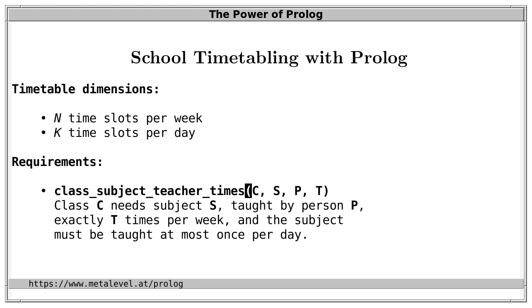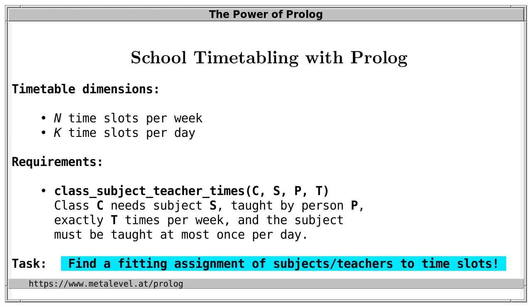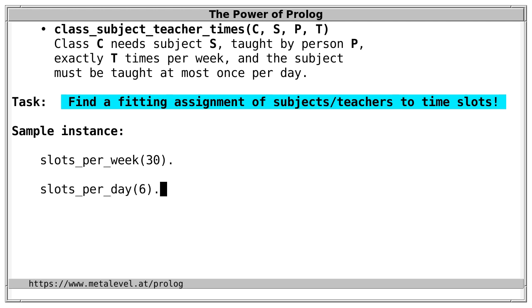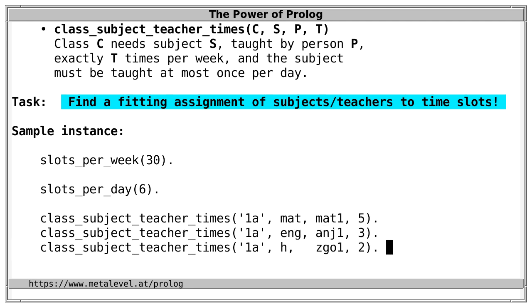Our task is to find a fitting assignment of subjects and teachers to time slots, and we assume the schedule is the same each week. For a concrete sample instance: 30 slots per week, 6 slots per day, a single class (1a), and 3 subjects — mathematics 5 times per week, English 3 times per week, and history 2 times per week.